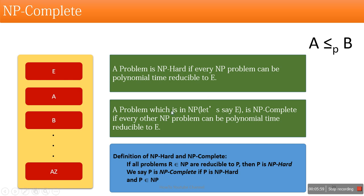If an NP-hard problem is also part of the NP class, then that problem is called NP-complete. In other words, a problem is NP-complete if every NP problem is reducible to it in polynomial time, and it is itself in NP. So: if all NP problems are reducible to problem P, it is NP-hard; and when that problem is also part of NP, it becomes NP-complete. Thanks for watching.